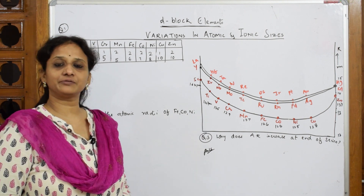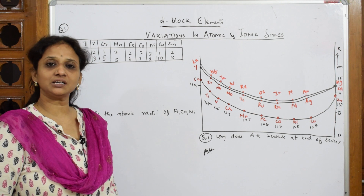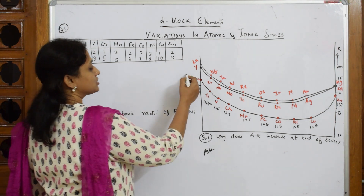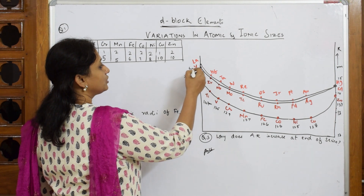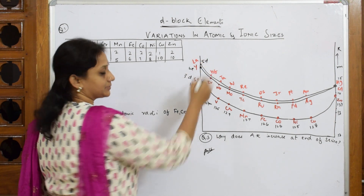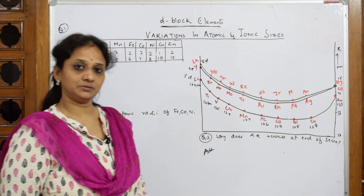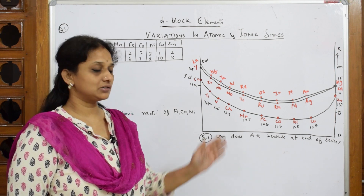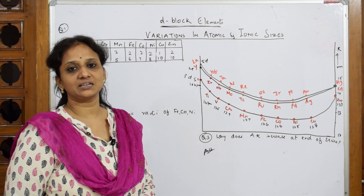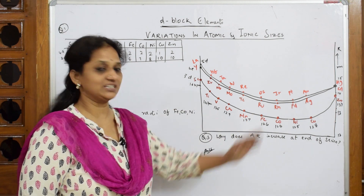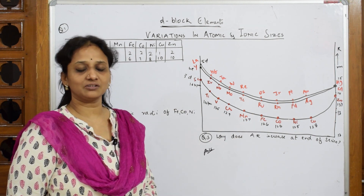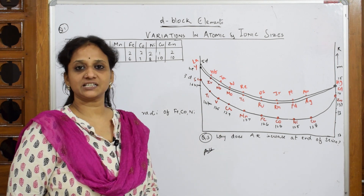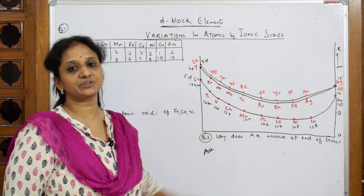Here we have a particular graph where we want to relate atomic radii with the 3D series, 4D, and 5D series. The 3D series is picked up here, 4D here, and 5D series here. Graphically, your NCERT book has given this data, and I picked up that graph from your NCERT book to explain the different trends in atomic radii.